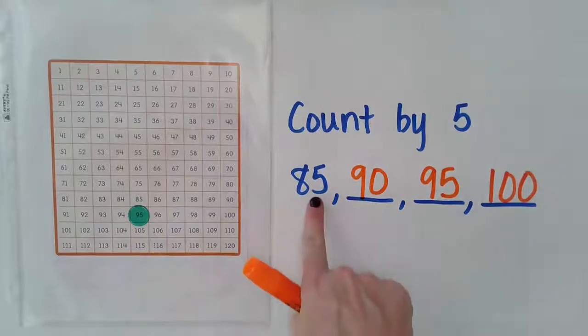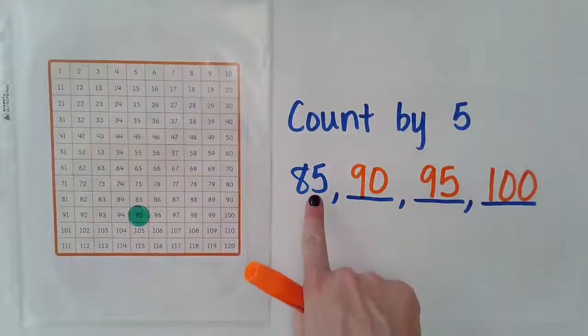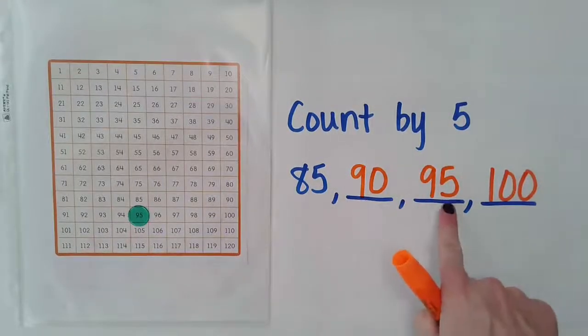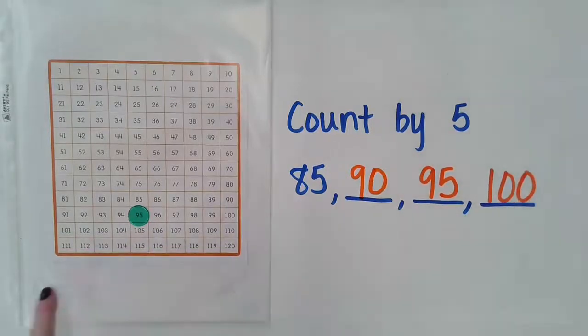And as you can see here, we know when we count up by our fives, we hit 85, 90, 95, 100. And that's shown here on our hundreds chart. So as you begin to work with your 120 chart, see if you can recognize patterns and relationships between numbers.